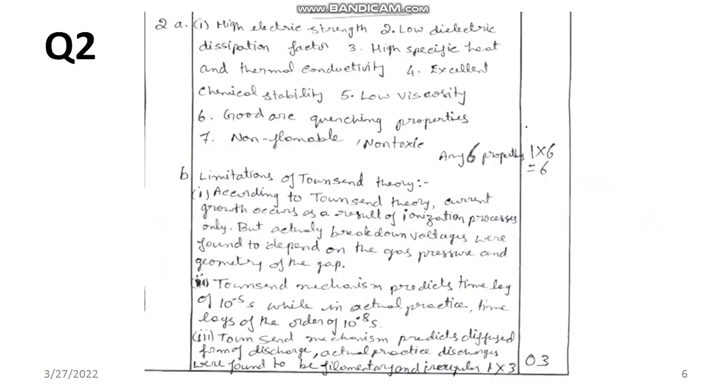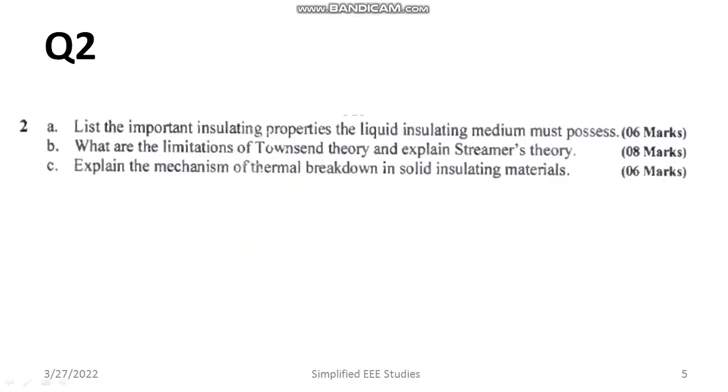Then afterwards you have to explain the streamer theory. Streamer theory with a diagram. So 3 plus 3, the total weightage will be 4 plus 4, 8 marks.